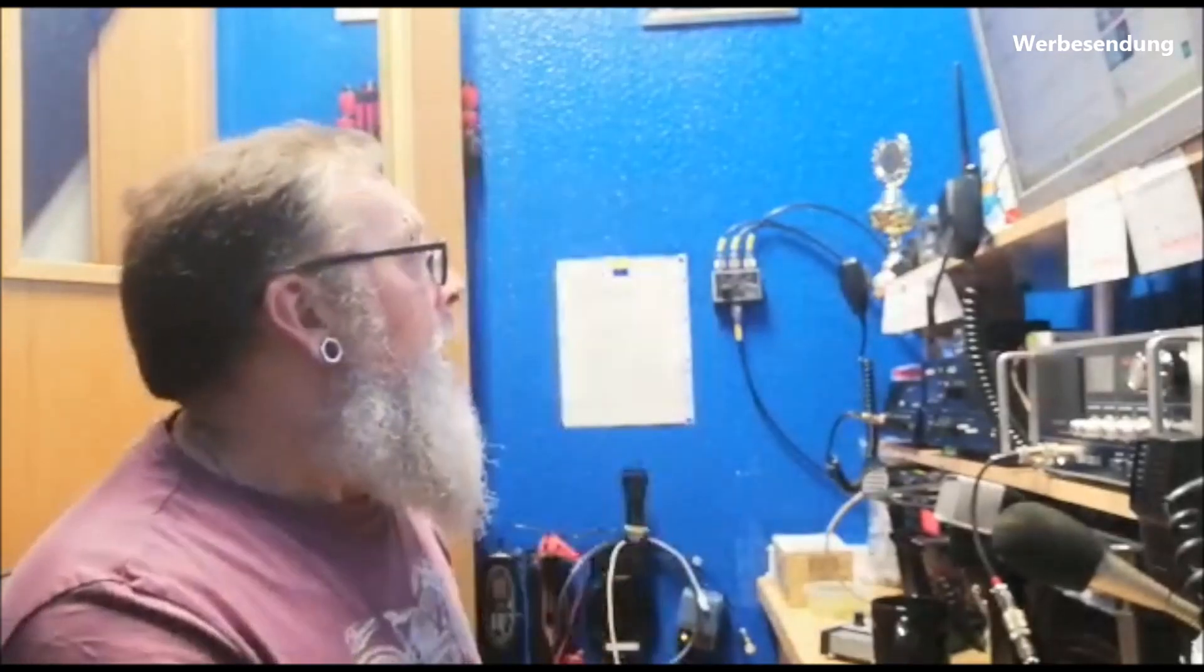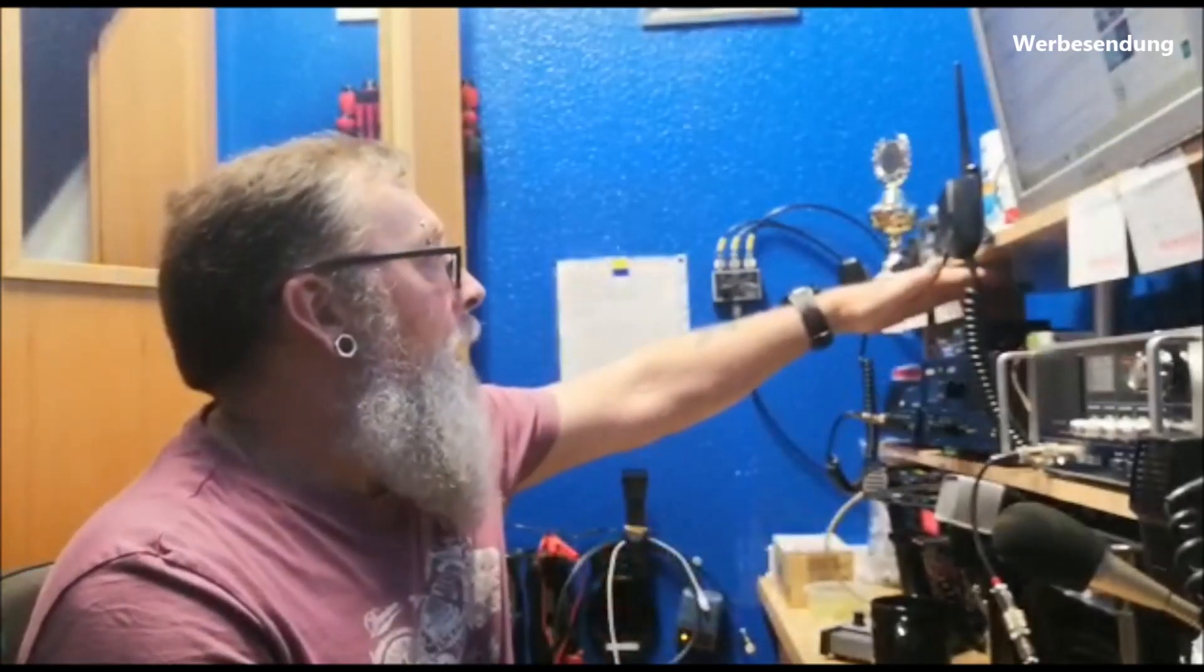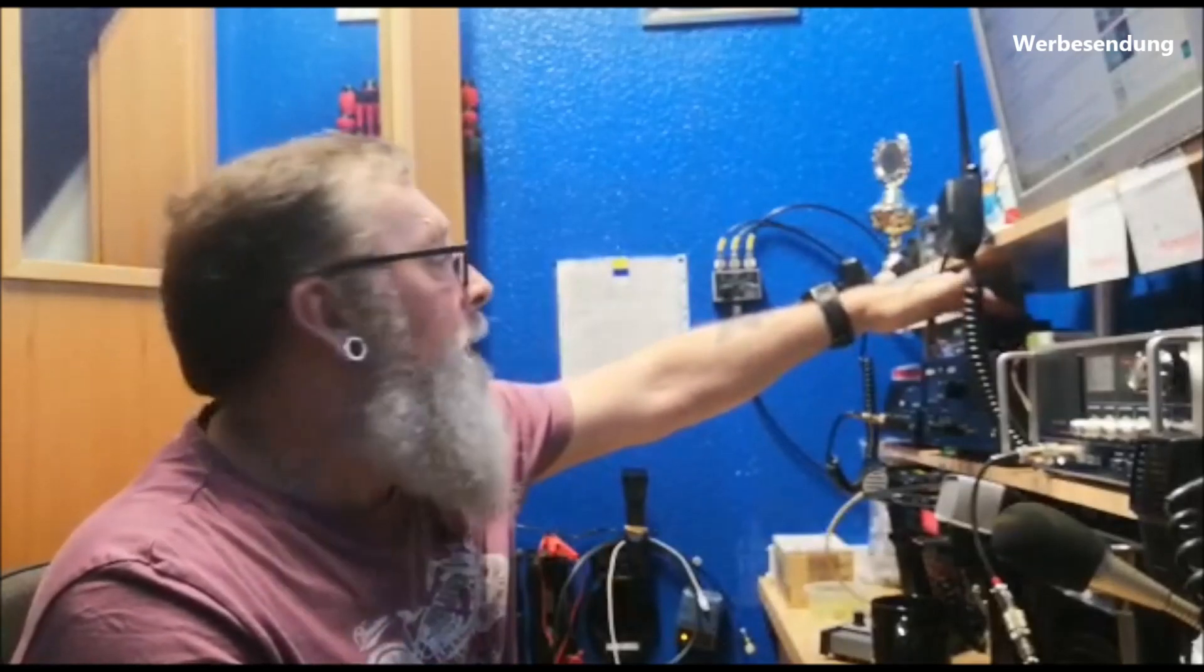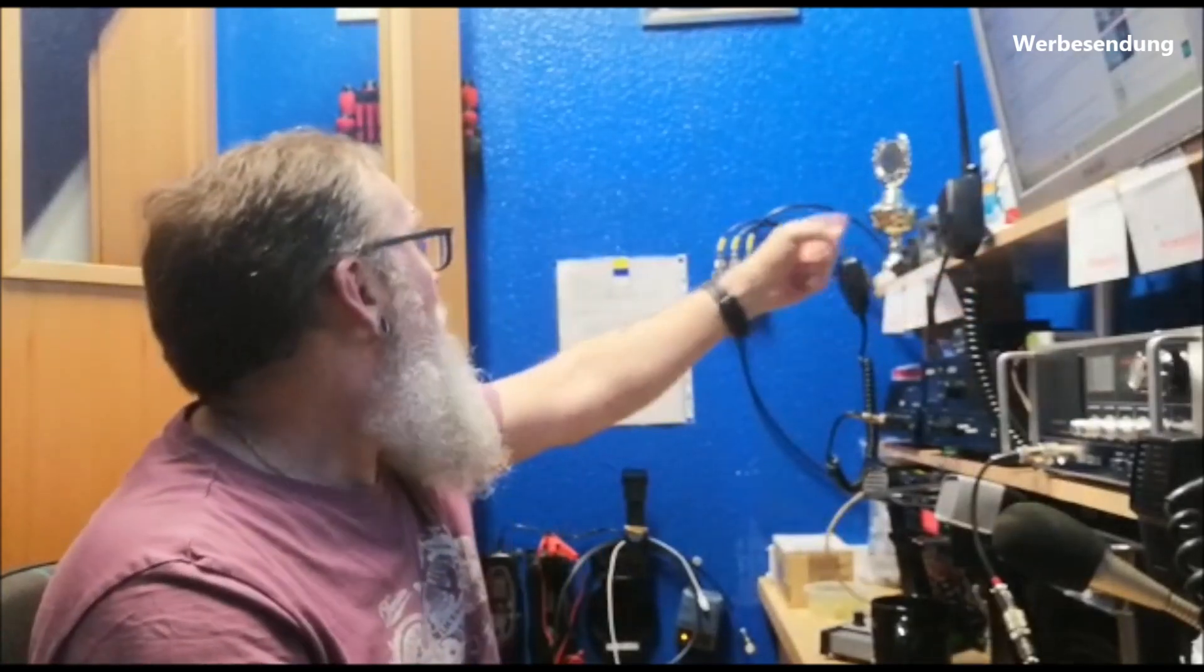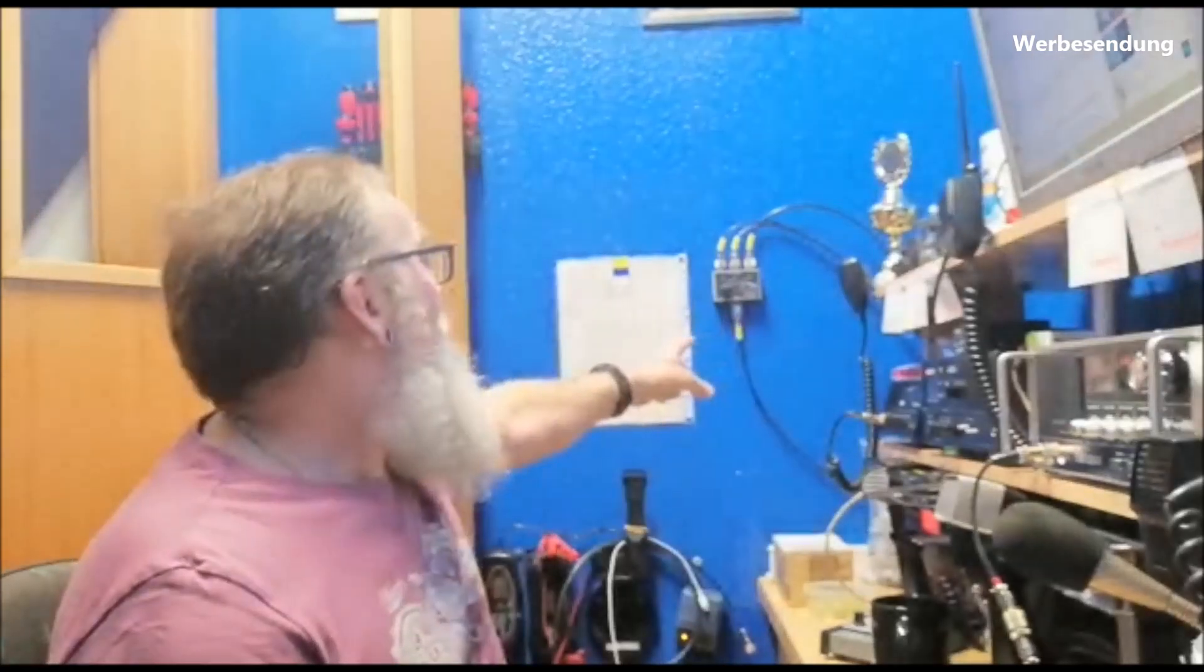Da musste ich feststellen, da ich doch ganz anders angeschlossen hatte, dass die Balkonantenne hier in mein Stehwellenmessinstrument reingeht. Von da aus geht ein Kabel hier zum Antennenschalter, und dann versorge ich im Prinzip oben die drei Geräte.